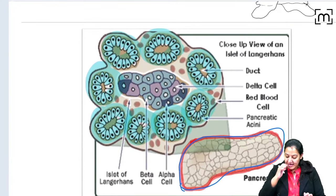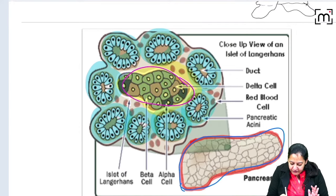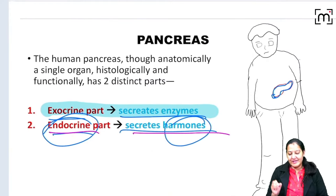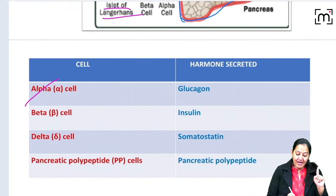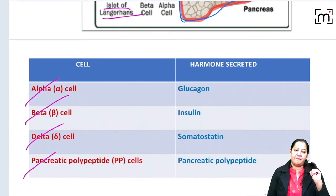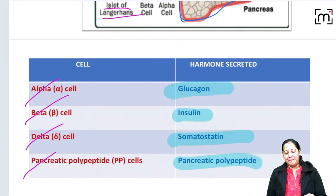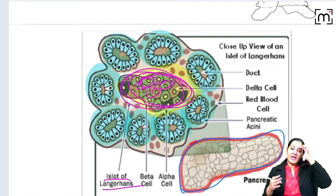I am interested in the endocrine part. The endocrine part is a collection of cells known as the islet of Langerhans, and it secretes hormones. There are four major cell types: alpha cells, beta cells, delta cells, and PP (pancreatic polypeptide) cells. Alpha cells secrete glucagon, beta cells secrete insulin, delta cells secrete somatostatin, and PP cells secrete pancreatic polypeptide.